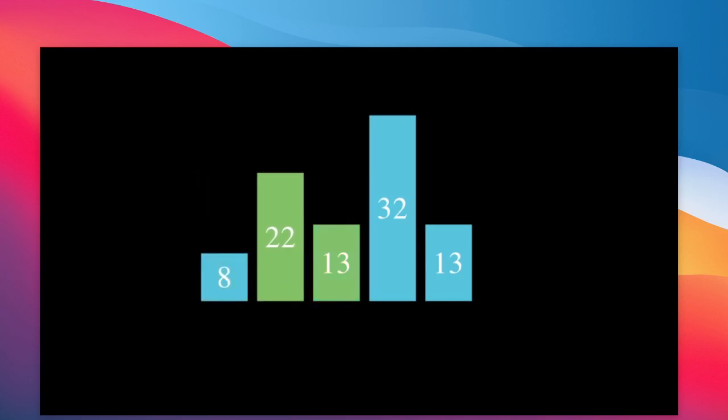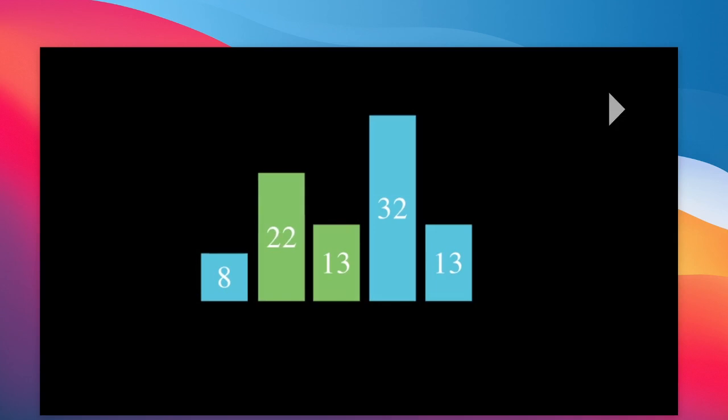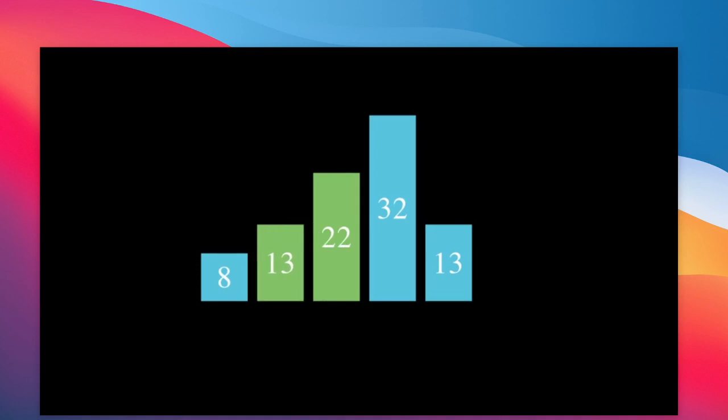Similarly, the next pass will compare 22 with the next element, in this case 13. Because 22 is again greater than 13, we will move 22 to the place of 13. So as you can see in this example, 13 and 22 swap their position.